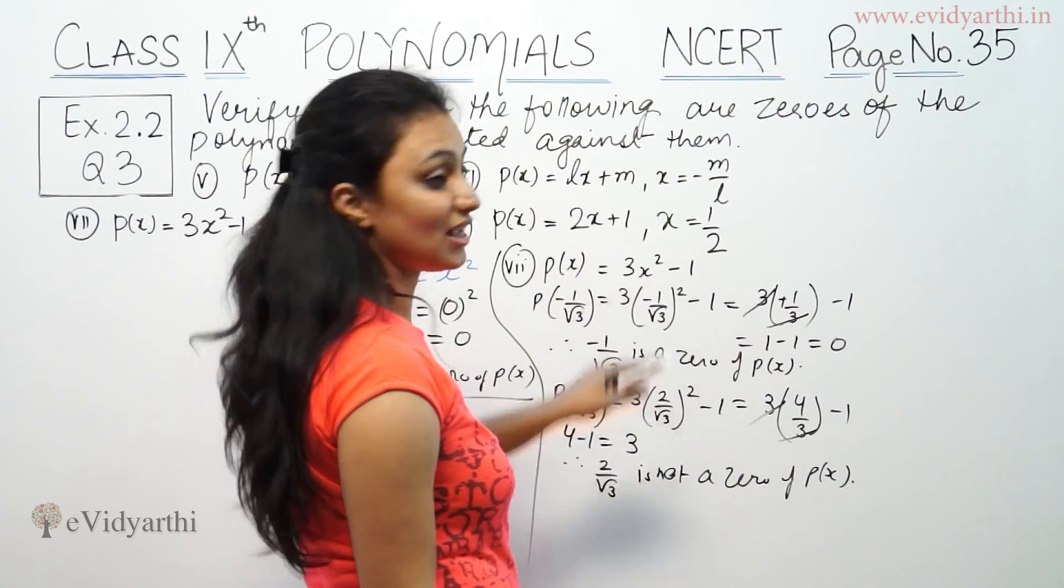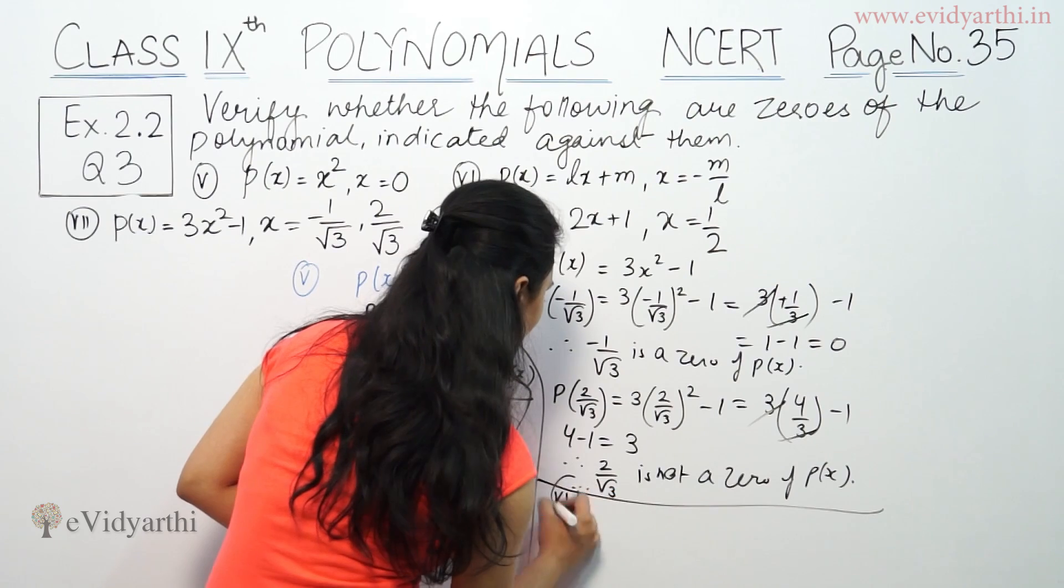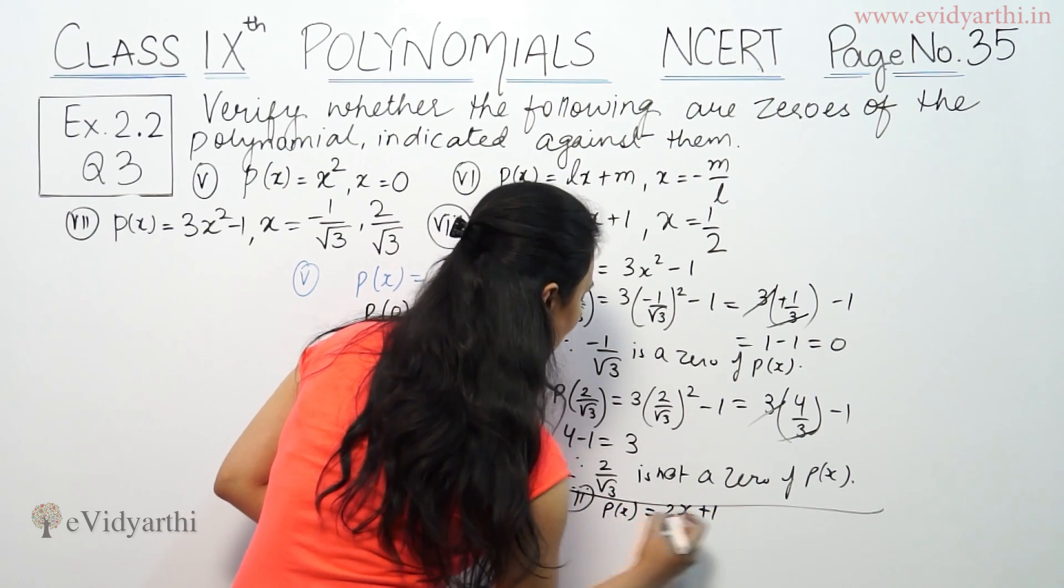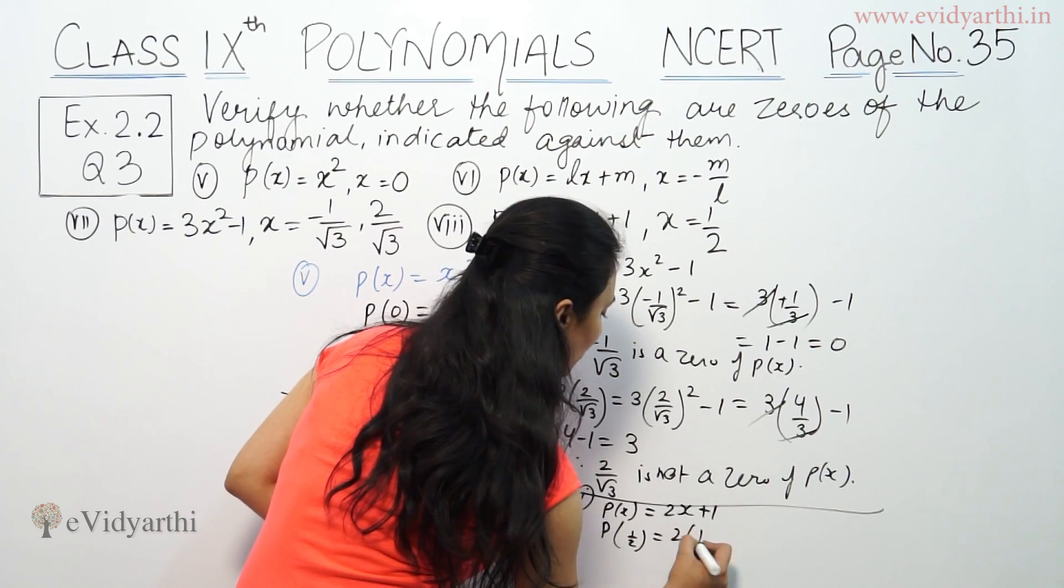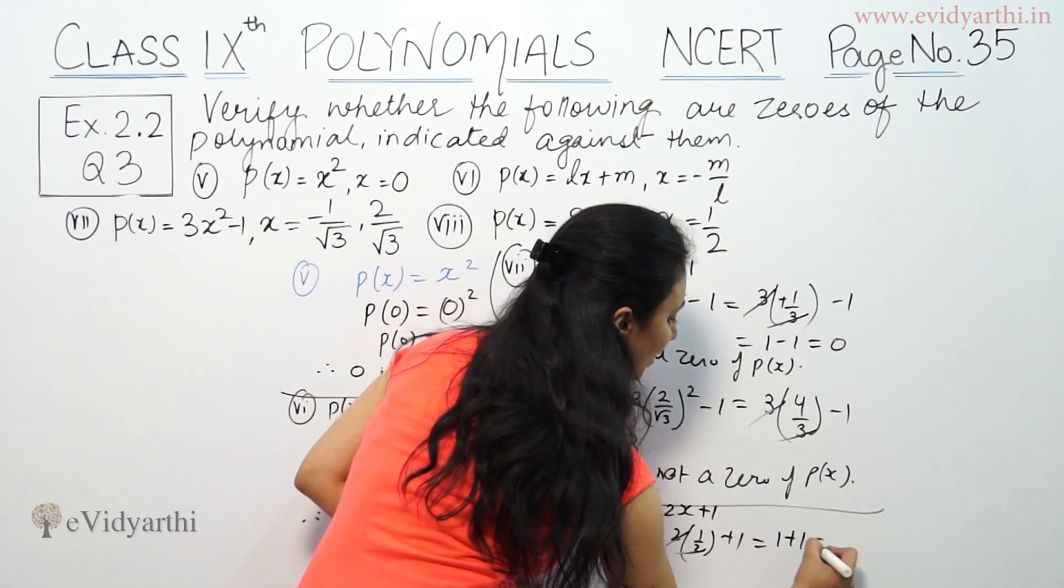Part number 8. So P(x) = 2x + 1. Put x = 1/2 here. 2 times 1/2 plus 1, that means 1 plus 1 means 2.